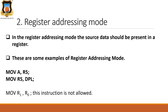The second addressing mode is register addressing mode. In this mode, the register name is used directly as a source operand. The source data should be present in the register. The data is moved from one register to another register, and data does not get erased from the first register. Examples include: MOV A, R5 and MOV A, DPL, meaning data is moved from one register to another.